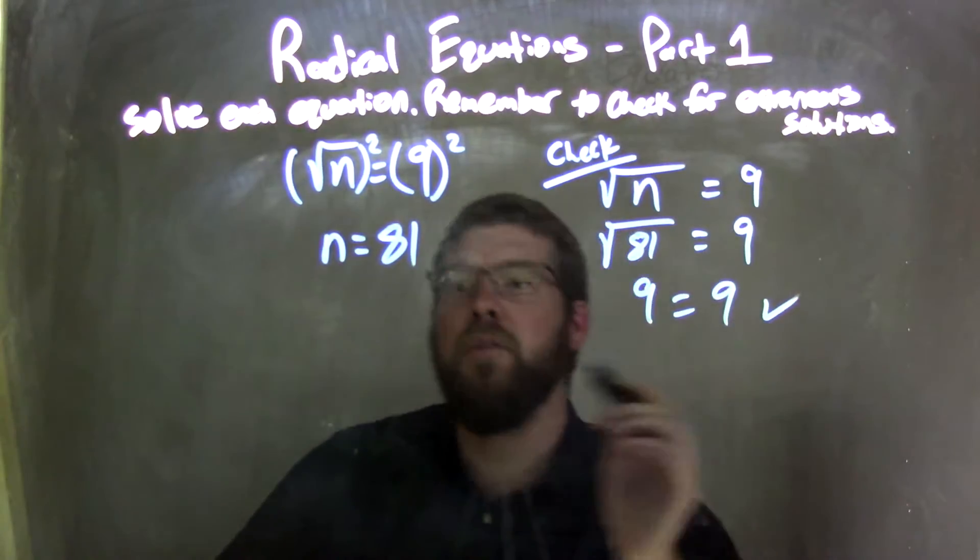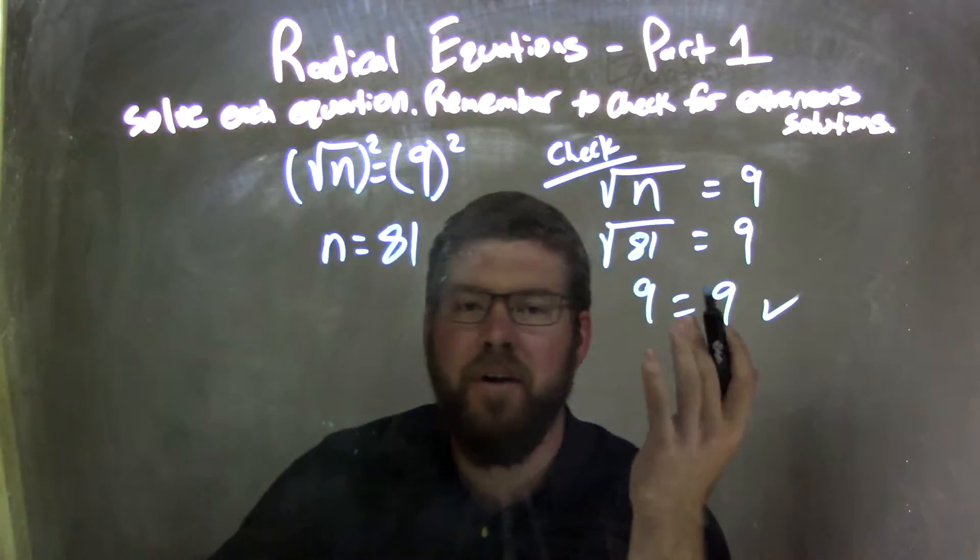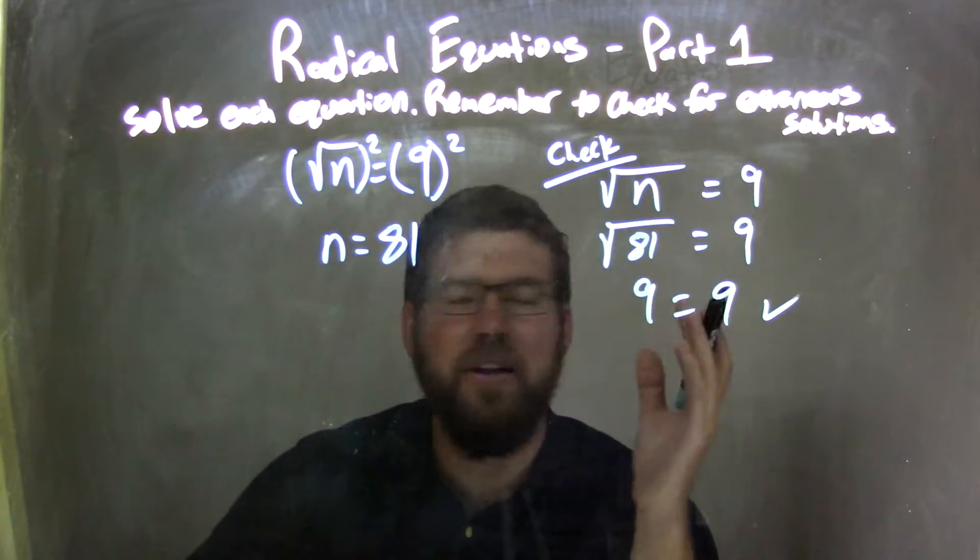The right and left side both equal, so we're good. So, n equals 81 is my final answer. It's the correct answer. There were no extraneous solutions.